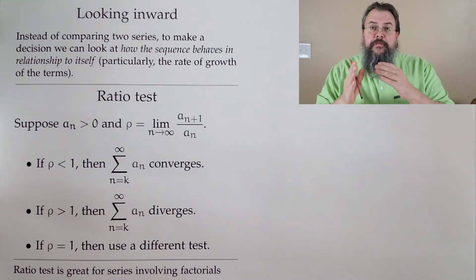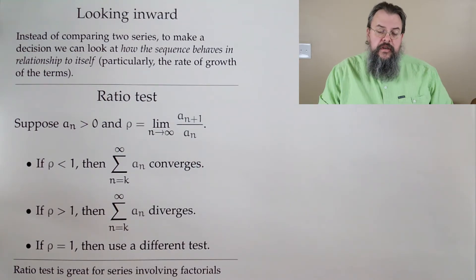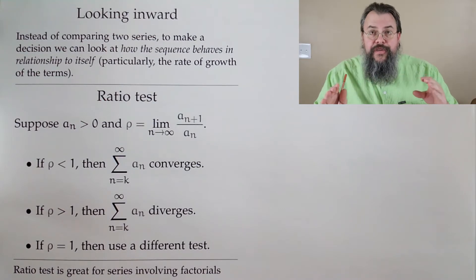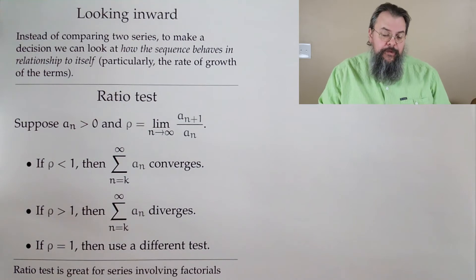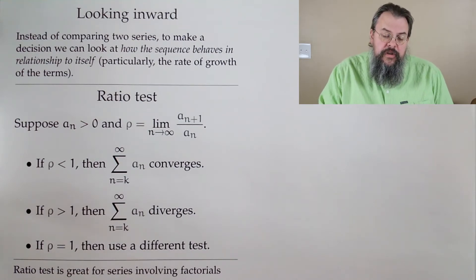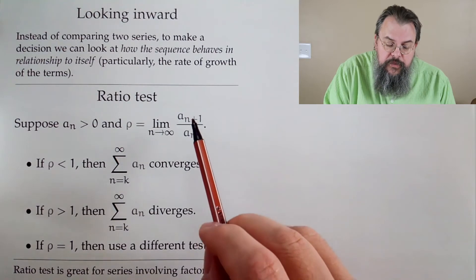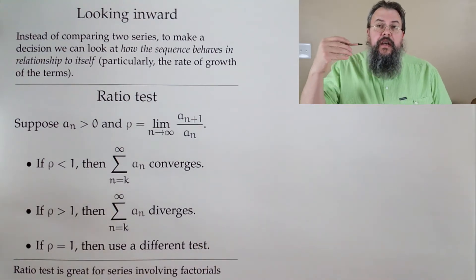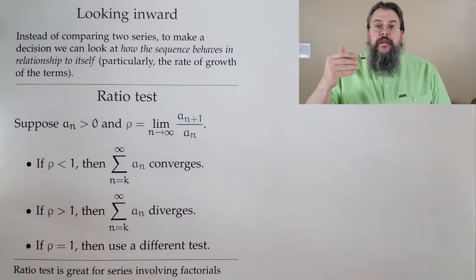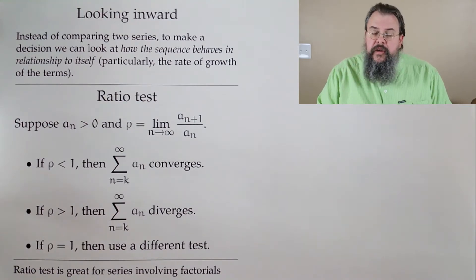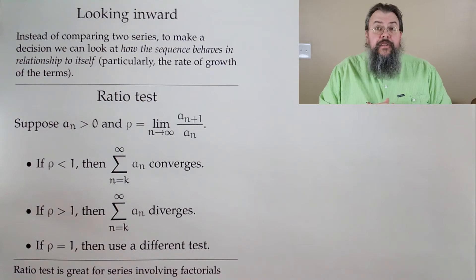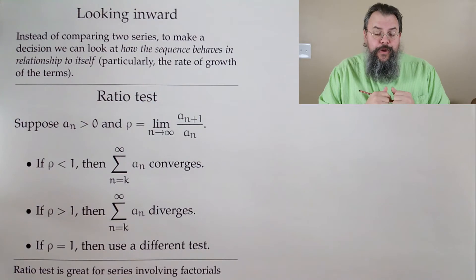How does the ratio test work? Suppose you have some sequence of numbers a_n, and we're going to assume they're positive. Don't worry — in the near future we'll be able to handle some negative things as well. What we're going to do is look at two consecutive terms: a_{n+1} divided by a_n, and take the limit as n goes to infinity. Let's suppose that there is a limit.